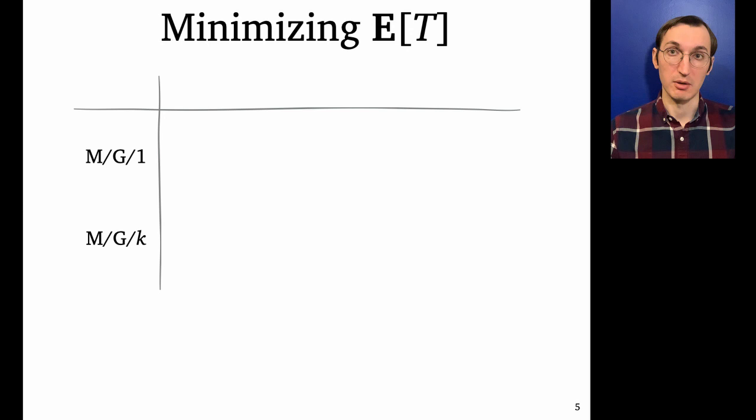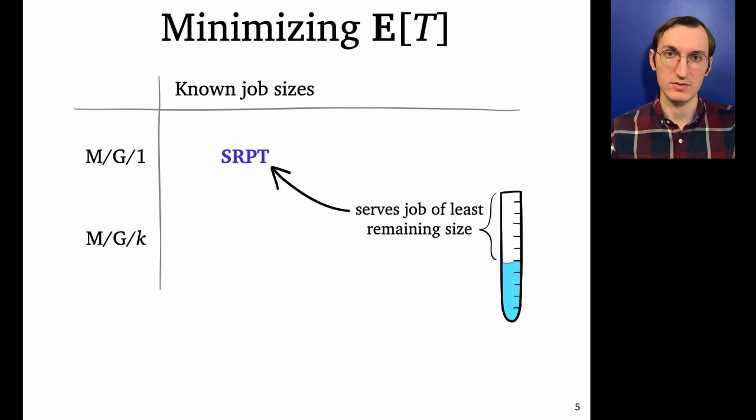So let's talk a bit about what's known in this space. So I'm going to make a small chart with rows for both the single server and multi-server case. Let's start with the setting of known job sizes. That is, when each job comes into the system, it announces how large it is. So if you've got a single server and known sizes, the classic result is that a policy called SRPT, shortest remaining processing time is optimal. This always serves the job of least remaining size.